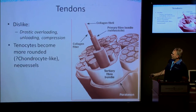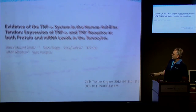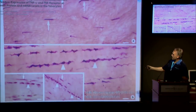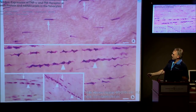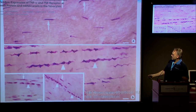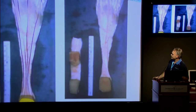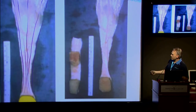We know a lot more about tendons now. Briefly, tendons don't really like being compressed, and they don't like underloading or overloading. In healthy tendons the tenocytes look normal, but in tendinopathic tendons we get more tenocytes and they become more rounded, appearing much more like chondrocytes. The biomechanics of the loads placed on the tendon help explain why tendons get damaged where they do.